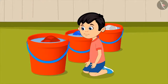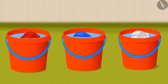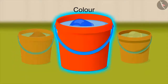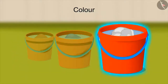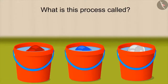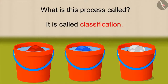In this way, on the basis of the characteristic of clothes — that is, on the basis of color — Chotu has classified and made different groups. Can you tell what this process is called? Yes, you got it right! It is called classification.